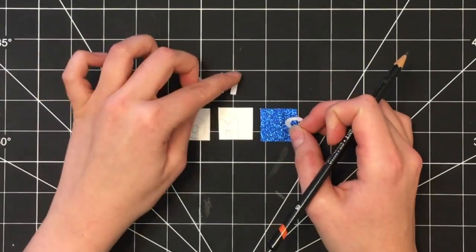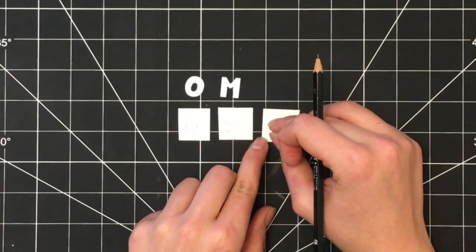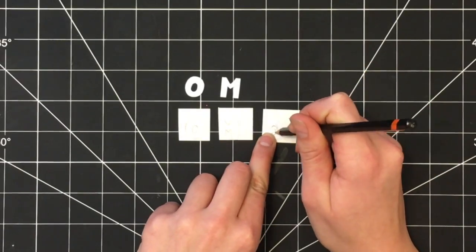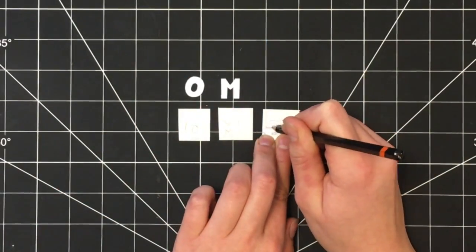Remember that when you trace something on it needs to be reversed, so flip the letter G around so that it's backwards when you're tracing it to make sure that when you cut it out it will be facing the right way.